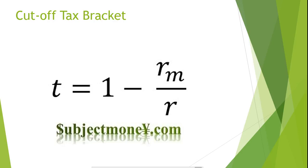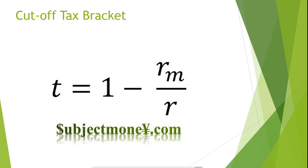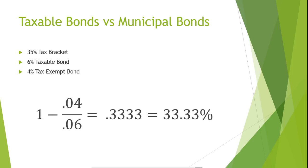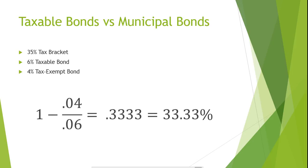Let's plug in our figures from our previous example to find the cutoff tax bracket. If we do 1 minus 4% over 6%, we find that our cutoff tax bracket is 33.33%. This means the tax-exempt bond should only be chosen by individuals in a 33.33% or higher tax bracket. Anyone in a lower tax bracket would be better off investing in the taxable bond.